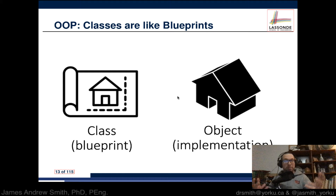You create the object after you have the plan. The object is what comes about from having a good plan, and it's only supposed to have the characteristics that are defined in the plan — otherwise you've built it wrong.